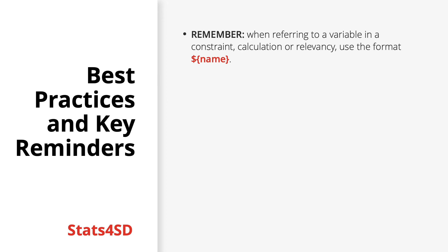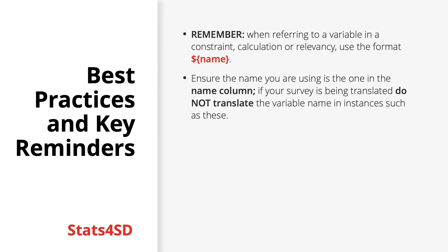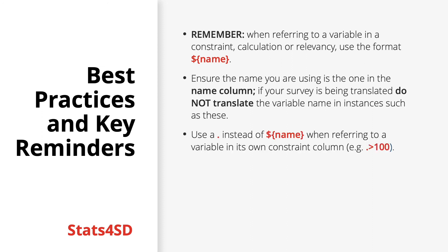A big reminder: when you want to refer to the value of a variable in a constraint, a calculation, a relevancy, or even a label or hint, always use the format dollar sign, open curly bracket, the variable name, close curly bracket. When using variable references in labels or hints with multiple languages, remember that while you would translate the text, the variable names within the brackets will always remain in the language in which they were originally written — you will always write the text contained within the name column on the survey sheet. Additionally, when referring to a variable on the same line as when you are creating it, use a period to represent this value in the constraint column — for example, period greater than 100 means the answer must be more than 100. This is the only case where you do not need the standard dollar-name format.